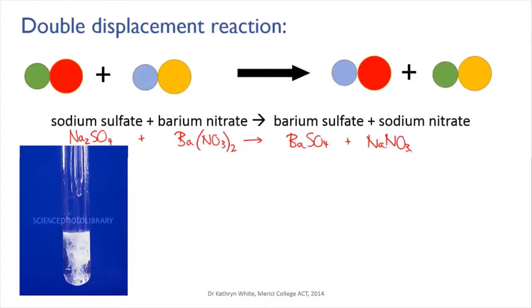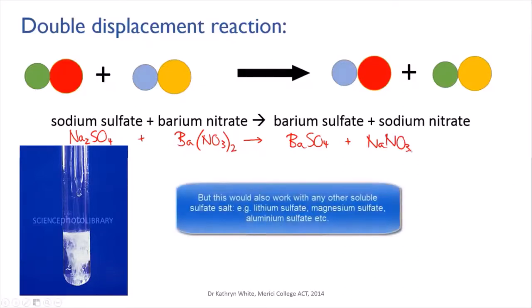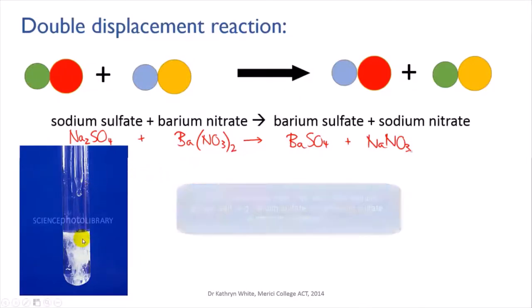The reaction written out here is of sodium sulfate with barium nitrate. The photo shows the reaction happening in a test tube. The sodium sulfate and the barium nitrate are both dissolved in water and, because they're colorless, the solutions look exactly like water. However, when one is added to the other, the ions swap and barium sulfate forms as an insoluble white precipitate.